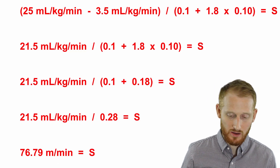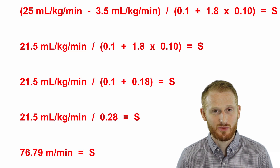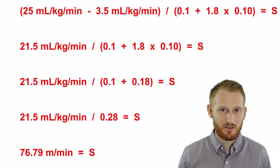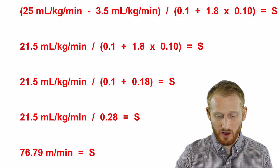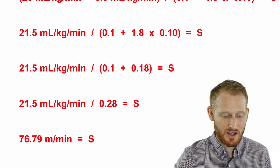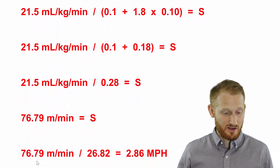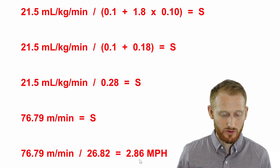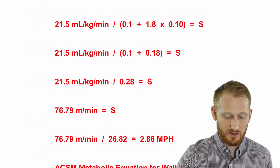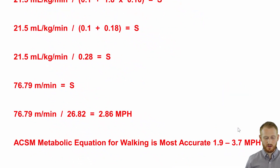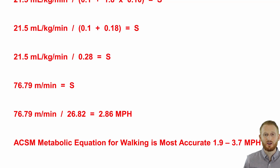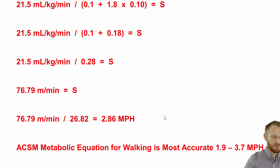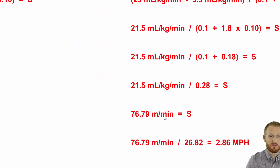Converting to miles per hour: 76.79 meters per minute divided by 26.82 gives us 2.86 miles per hour. The ACSM walking equation is most accurate between 1.9 and 3.7 miles per hour, and 2.86 falls right in the middle of that range — perfect. So Andrew should be walking at 2.86 miles per hour with a 10% grade in order to achieve the prescribed 25 mL/kg/min oxygen consumption.